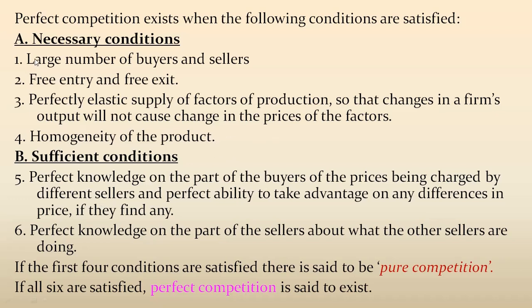If these first four conditions are fulfilled, it is called pure competition. If the first four conditions are satisfied, then it is said to be pure competition. Now, the sufficient conditions: condition number five is perfect knowledge on the part of the buyers of the price being charged by different sellers, and perfect ability to take advantage of any differences in price. Remember that price differentiation does not take place in a perfect competition market.